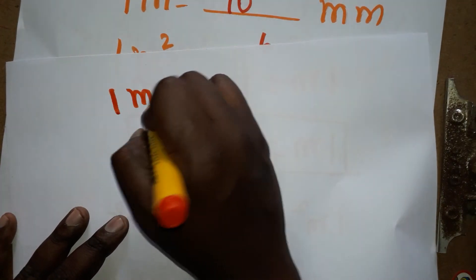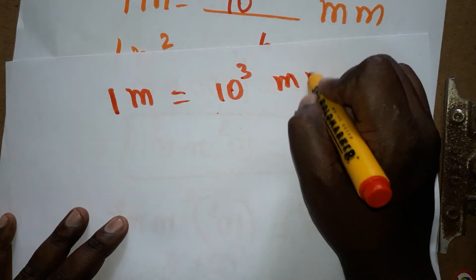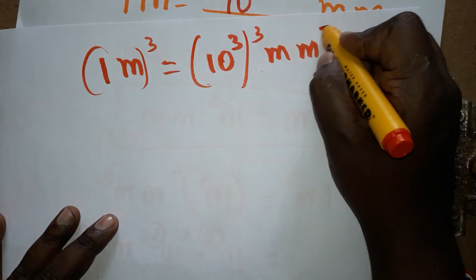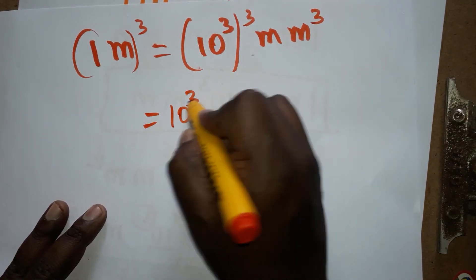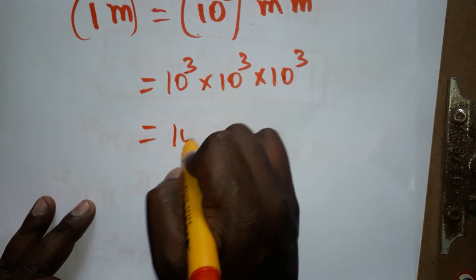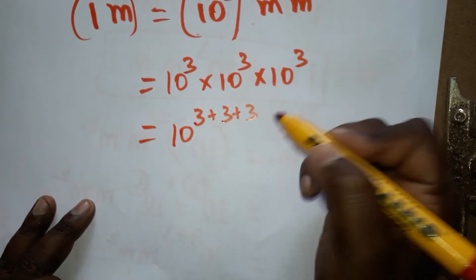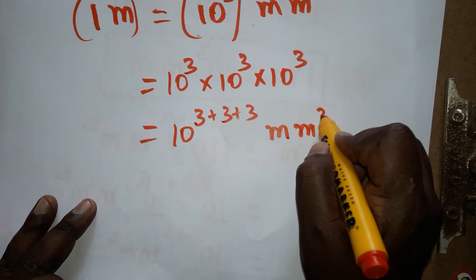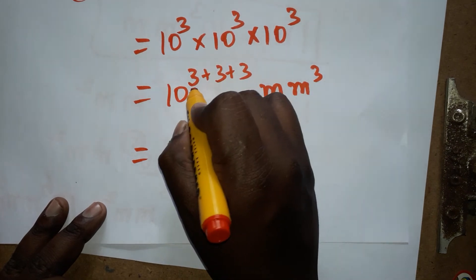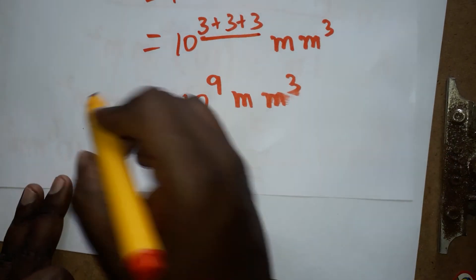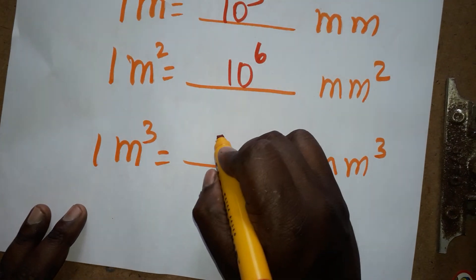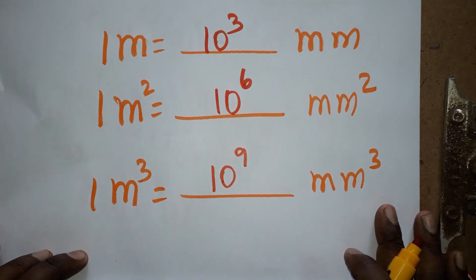Next, 1 meter cube is equal to how many millimeter cube. 1 meter is 10 power 3 millimeter — now cube it. Cube means three times, so we write 10 power 3 into 10 power 3 into 10 power 3. We add the powers: 3 plus 3 plus 3 equals 9. So 1 meter cube is equal to 10 power 9 millimeter cube.